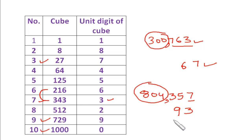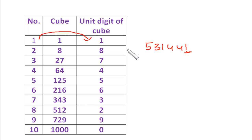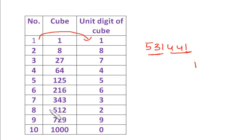Let's take one or two more examples. The next number is 531441. The unit digit is 1, and the cube of 1 is also 1, so the cube root will have 1 at the units place. The remaining part, 531, lies between the cubes of 8 and 9, so the tens digit is 8. Therefore the cube root of 531441 is 81. It's very simple!